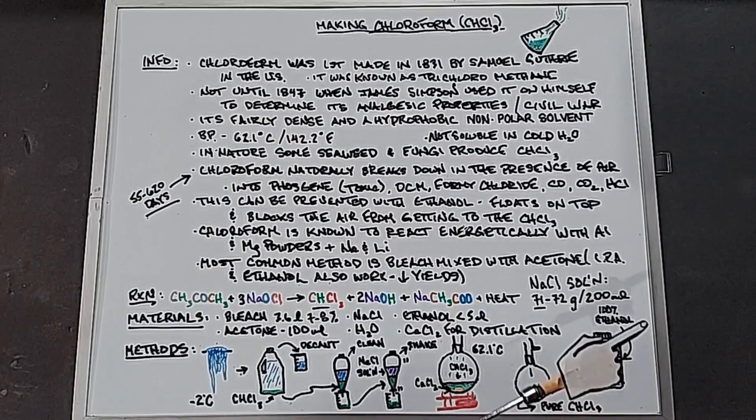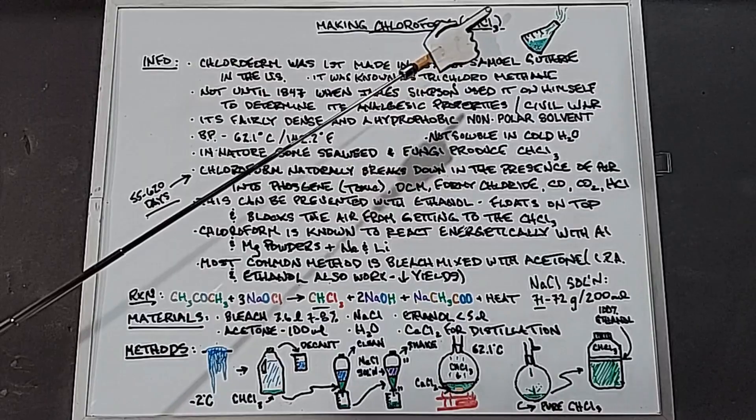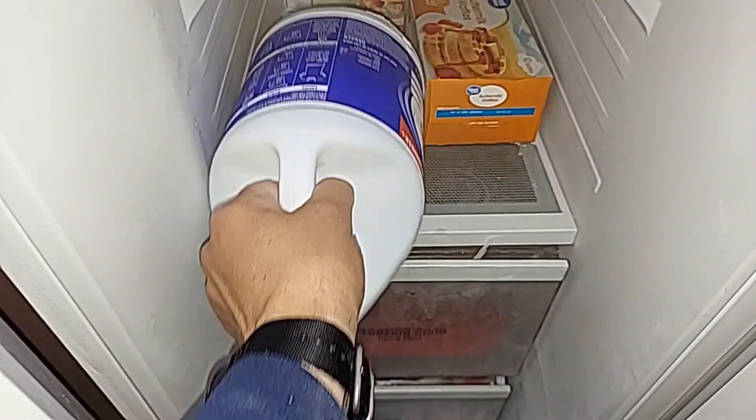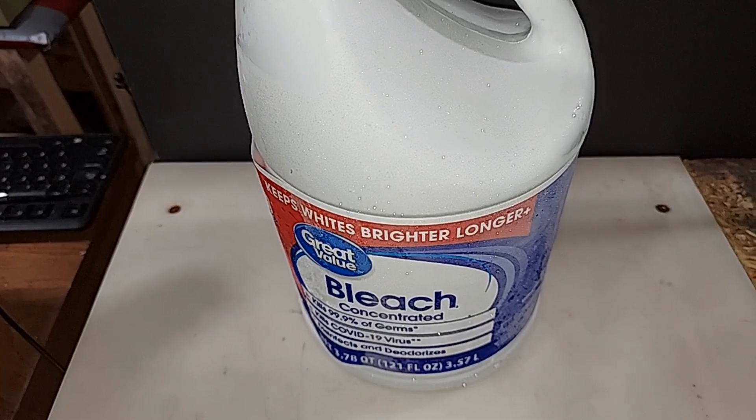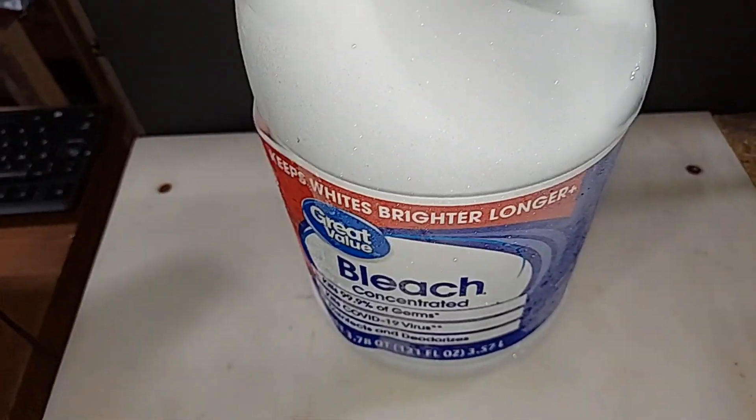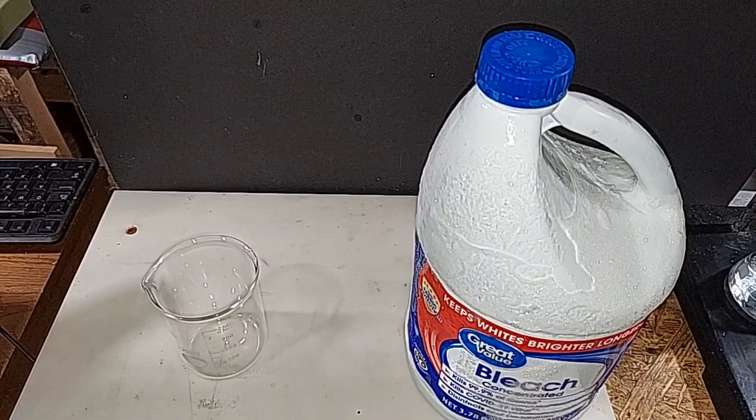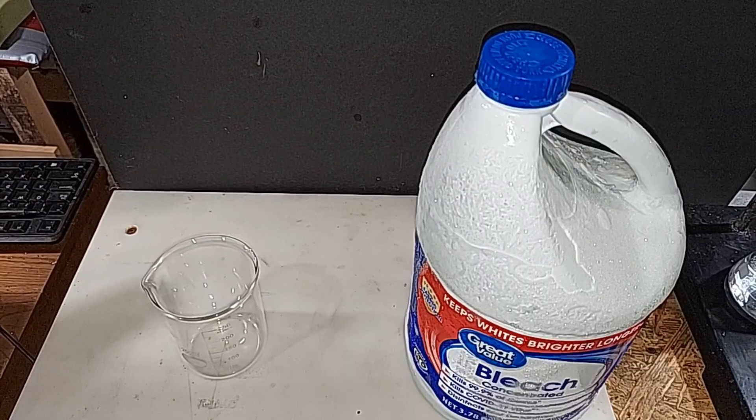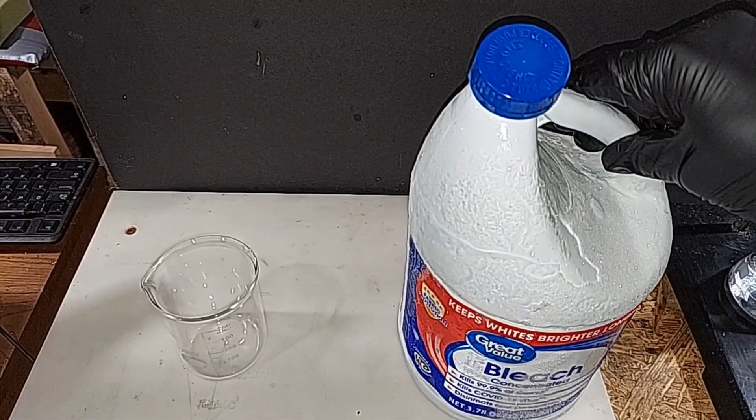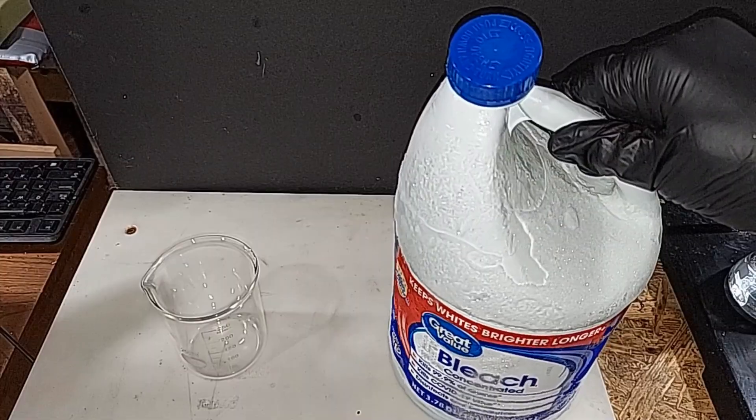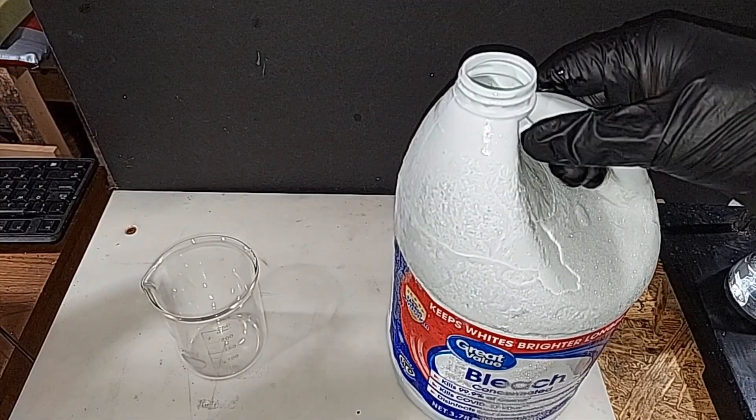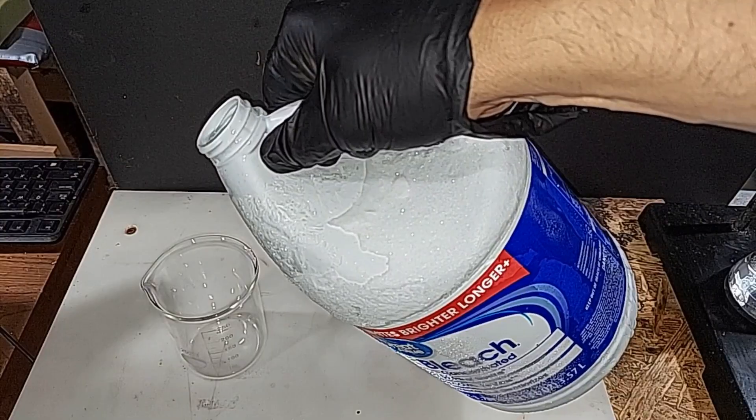We start making our chloroform by getting our bleach very cold. It's been in my freezer a couple days, which is set pretty cold. I didn't realize this when I pulled this out, but it's a solid block, so that's got to thaw. I took bleach from a different container and heated it up and poured it inside. Because this is exothermic, I'm going to go ahead and do this. We need to pour out 100 milliliters of bleach because we're going to put the acetone in there, of course.